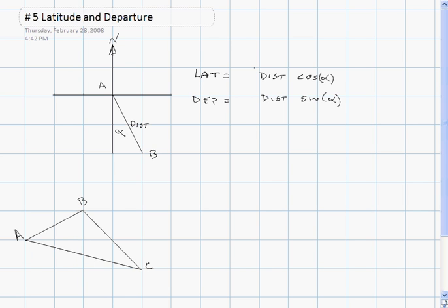Now latitude and departure has sign. Both can be either positive or negative. If the bearing is north, then the latitude is positive. If the bearing angle is south, it's negative.